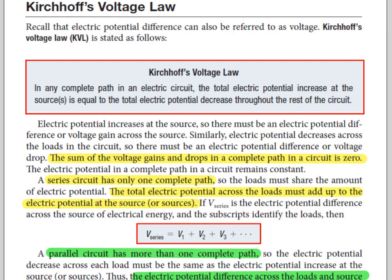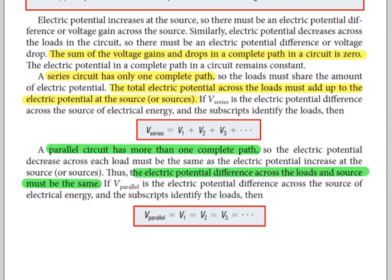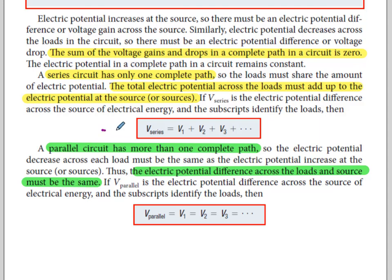Now Kirchhoff's voltage law. In any complete path in an electric circuit the total electric potential increase, remember electric potential fancy way of saying voltage, at the source is equal to the total electric potential decrease throughout the rest of the circuit. There are two possibilities here, we have both series and parallel. When we look at a series circuit, the voltage drops mean how we're losing energy or we're using energy. Gains will be we're adding energy back into the circuit. The summation of all of the voltage drops and gains should be equal to what we started with at the battery.